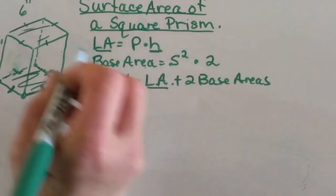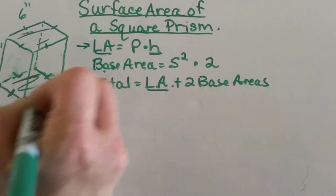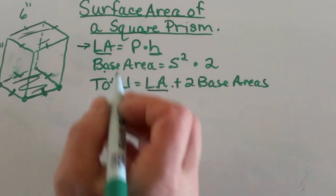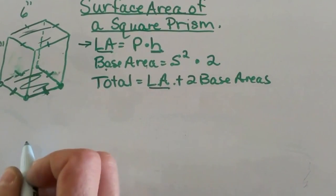So we have two parts to look at in our formula. We have what we call the lateral area and those are the sides that go around the prism. And then we have the bases. On this one our bases are squares so it's really pretty simple.